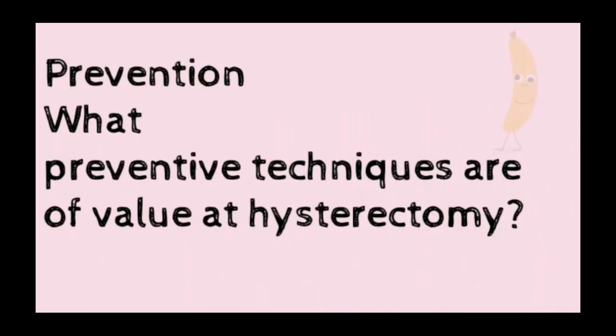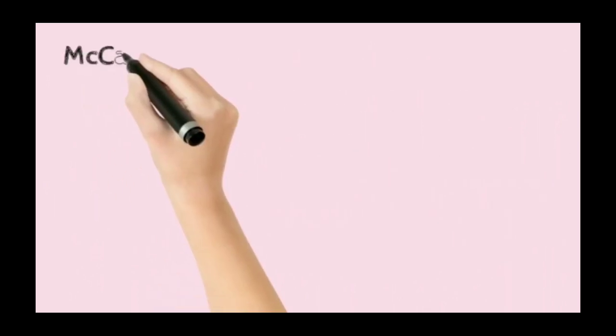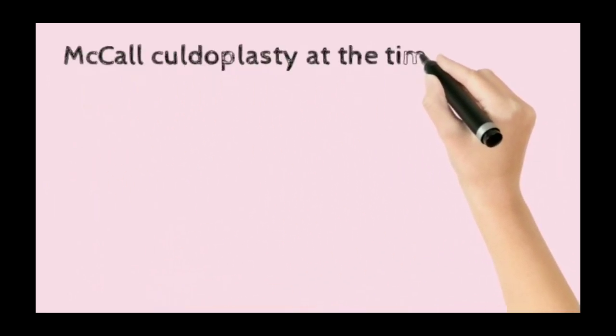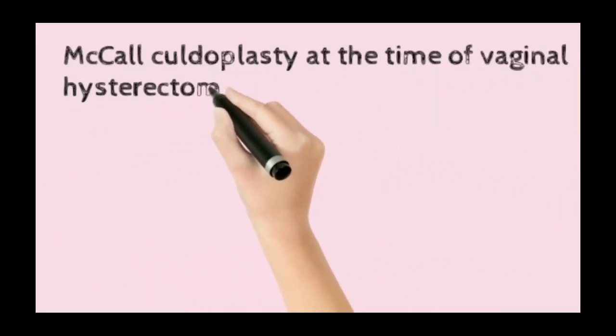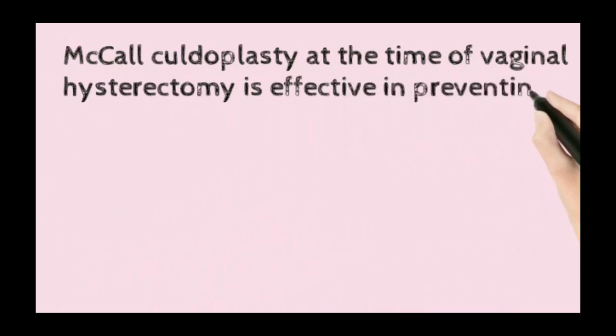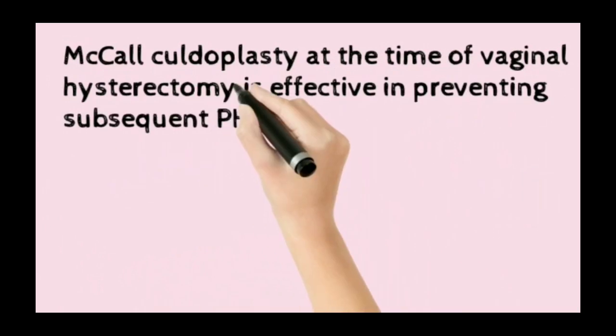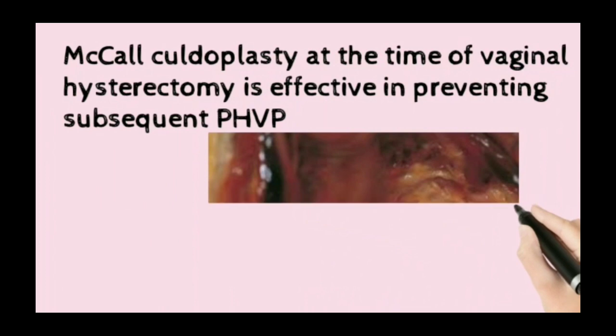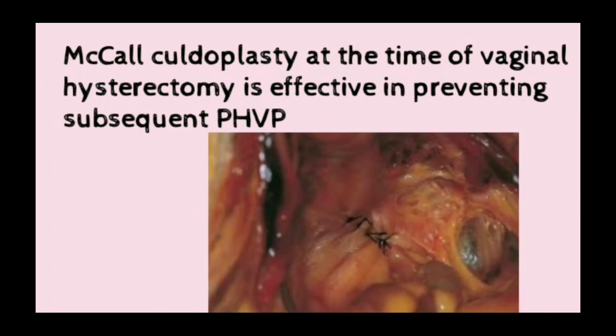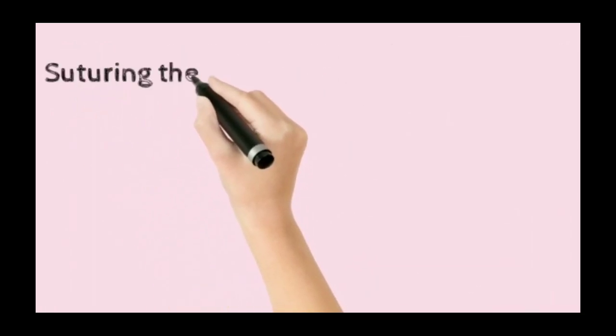Prevention. What preventive techniques are of value at hysterectomy? There are different techniques. These three are very important. First, McCall culdoplasty at the time of vaginal hysterectomy is effective in preventing subsequent post-hysterectomy wall prolapse.